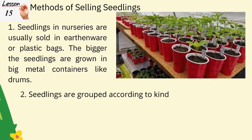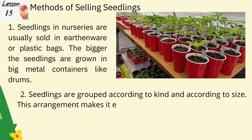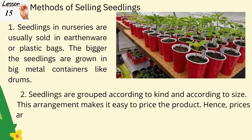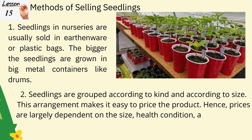Seedlings in nurseries are usually sold in earthenware or plastic bags; the bigger seedlings are grown in large metal containers like drums. Seedlings are grouped according to kind and size — this arrangement makes it easy to price the product. Prices are largely dependent on the size, health condition, and maturity of the seedlings.